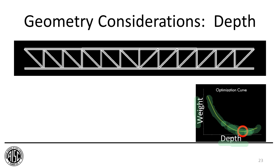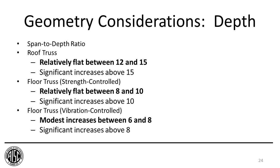You want to be in the portion of the curve where it's flattening out, not where it's steep. Over time we've developed general rules for span-to-depth ratios. For a roof truss, the relatively flat portion occurs at a span-to-depth ratio between 12 and 15. For a floor truss that's strength-controlled or not sensitive to floor vibrations, that ratio is between 8 and 10. For a floor truss that's vibration-controlled, the span-to-depth ratio is 6 to 8, so vibration-controlled trusses are often very deep to remain reasonably economical.